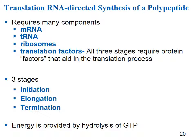Translation is the RNA-directed synthesis of a polypeptide. Transcription comes first, then translation — think of translation happening later. Translation requires mRNA, tRNA, a ribosome, and translation factors. It has three stages: initiation, elongation, and termination. Energy is provided by the hydrolysis of GTP, which is an energy carrier similar to ATP.